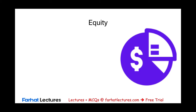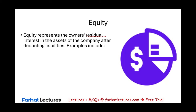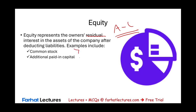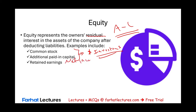Under equity, equity represents the residual interest in the assets of the company — assets minus liabilities equals equity. Typically you will see common stock and additional paid-in capital, representing the amount investors and stockholders invested in the company. We could also have retained earnings — net income over the years minus dividends — and treasury stock, which is a negative equity item that reduces total equity.